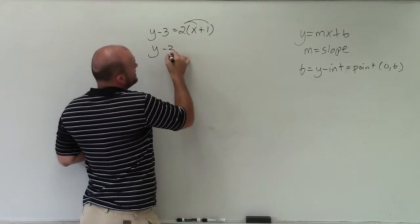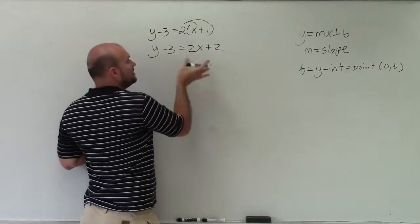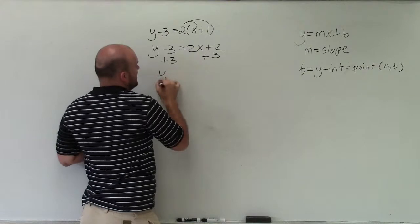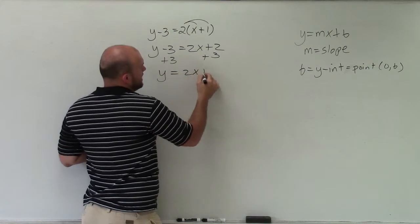I'm left with y minus 3 equals 2x plus 2. Now to isolate my y, I'll add 3 on both sides.